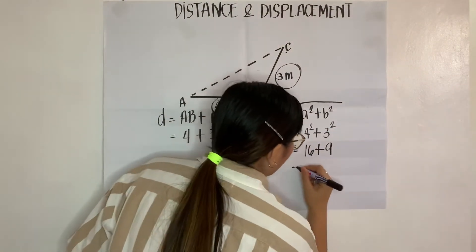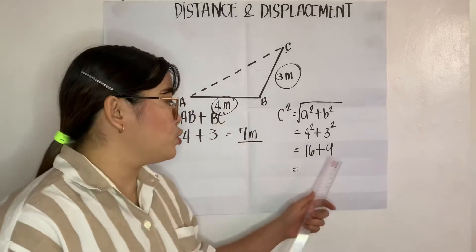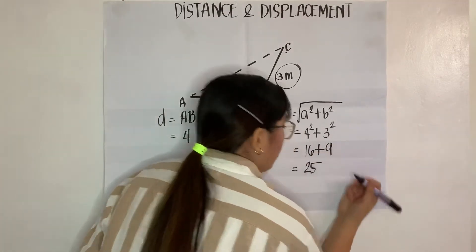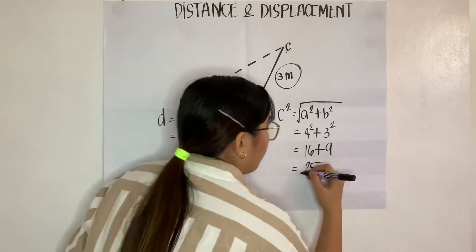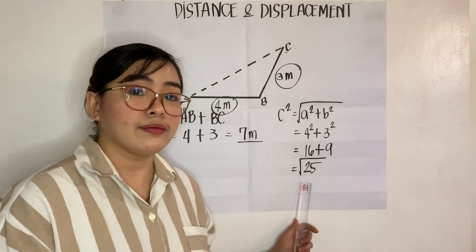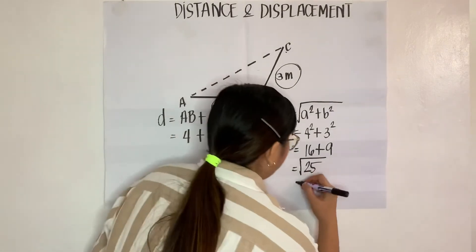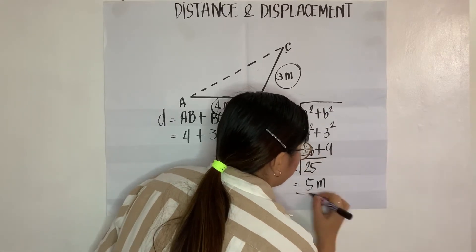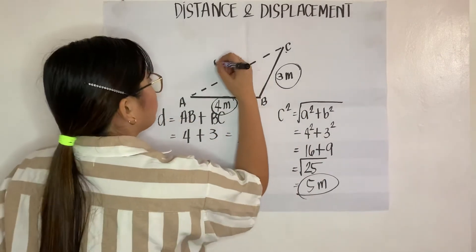Very good. 9. So, the sum for this two, 16 plus 9 is equal to 25 and we're going to get the square root of that. What is the square root of 25? Very good. So,